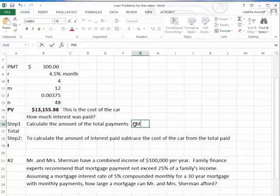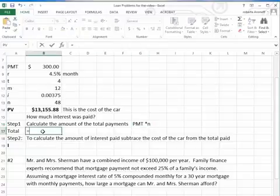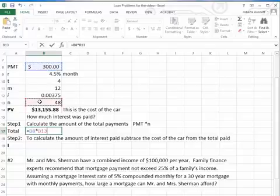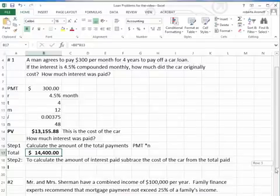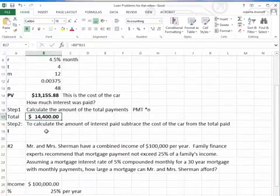And the total payment formula is the PMT times the total payments. So we're going to take the $300 times the 48 payments that were made. And that tells us that this man paid $14,400 back to the bank for the amount that he borrowed.